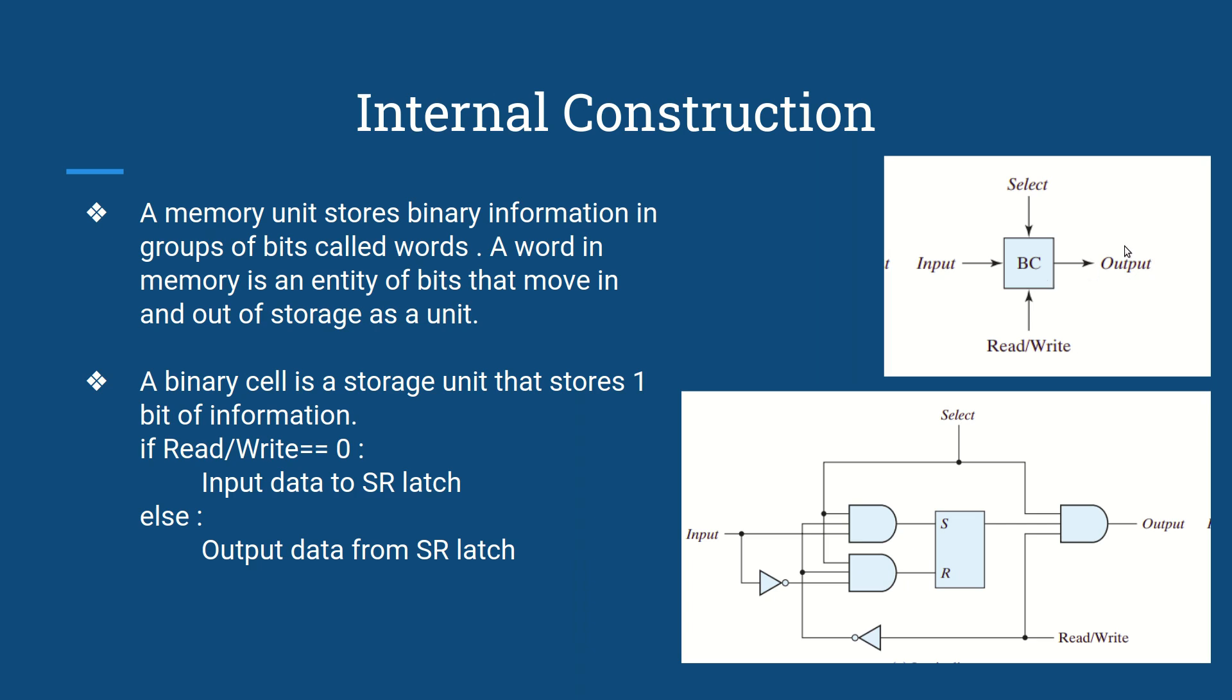Output will give us the result of the reading, and input will have the data which we need to save or write in the binary cell. So if read/write equals 0, then this negation will give us 1 here, and if we AND it with the input, what we will get is the input data. Here we will get the negation of input.